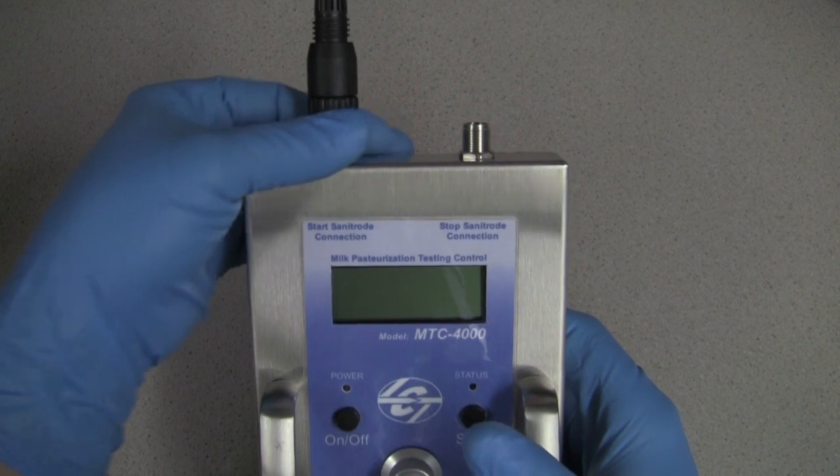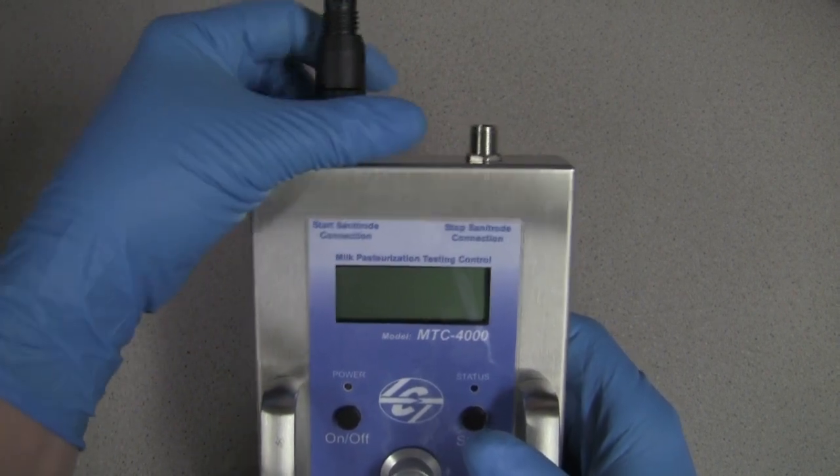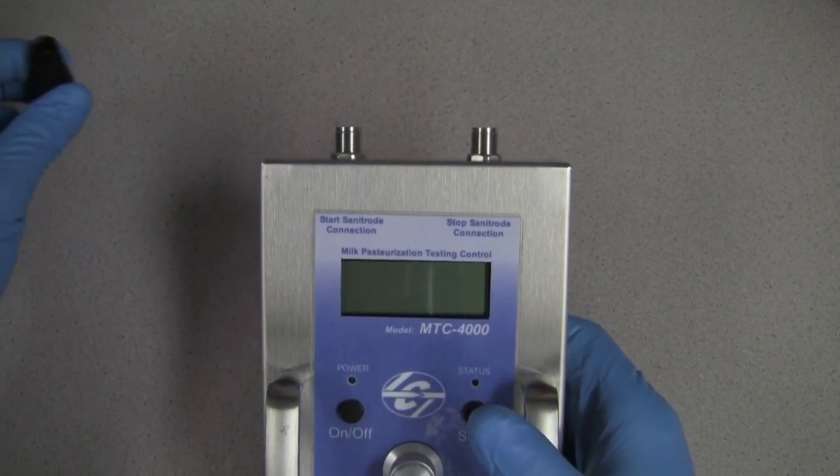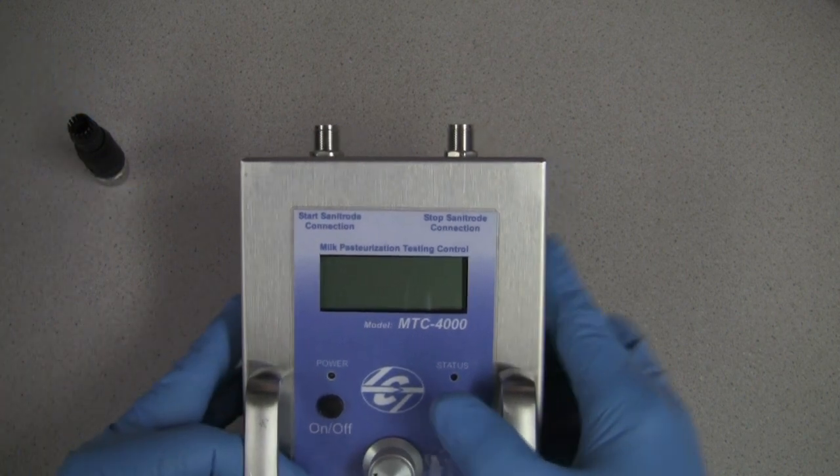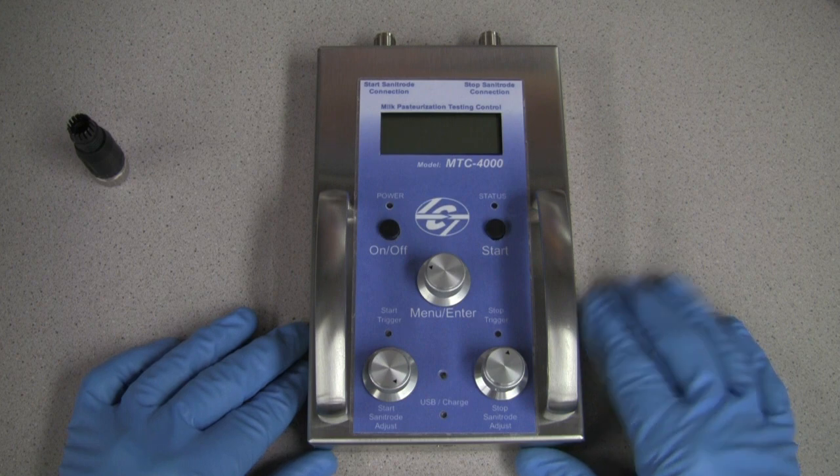FYI, be careful not to tighten the jack connector into the MTC4000 using the black plastic part of the connector. The outer stainless steel ring is the only part of the connector that rotates. Rotating the black portion of the connector will lead to twisted, broken pins.